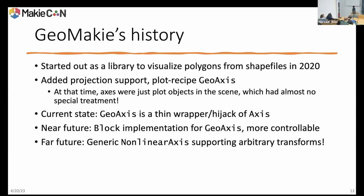A brief history: GeoMakie started as a library to visualize polygons from shapefiles around 2020. Very soon we added projection support. We added the plot recipe GeoAxis. At that time, axes were just plot objects in the scene, so the scene would have a nonlinear transformation and all plot objects would inherit it — the plot object had almost no special treatment, so it was really easy to create. Currently in the latest released version, GeoAxis is a hacky hijack of the Makie axis object. It lets the axis handle layouting, but hijacks the grids, frame, and all of that to make them representative of the nonlinear space.